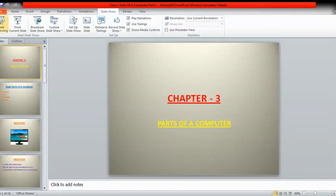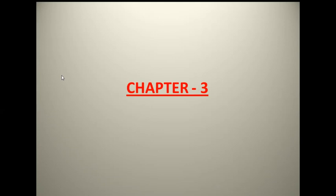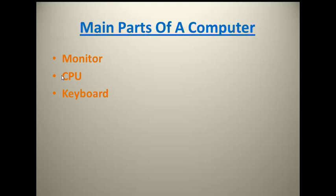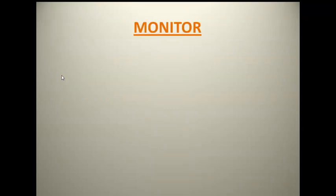Children, today I'm going to start with chapter number three, which is Parts of a Computer. In this chapter you'll be studying about different parts and their usage. There are basically four main parts of a computer: monitor, CPU, keyboard, and mouse. Now I'll explain them one by one.